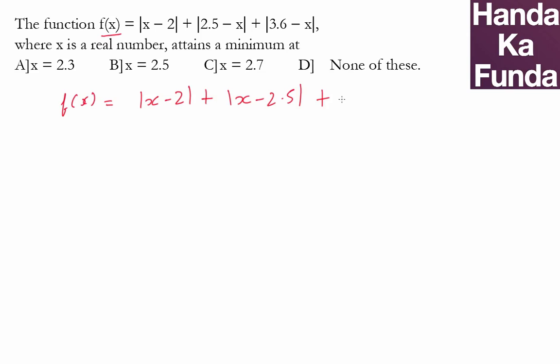This means my function is |x - 2| + |x - 2.5| + |x - 3.6|. Whenever you have something like this and you are supposed to minimize the value, just mark these points on the number line.